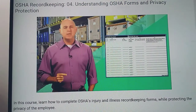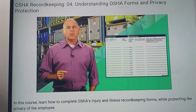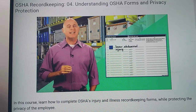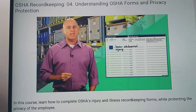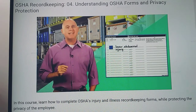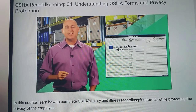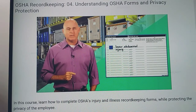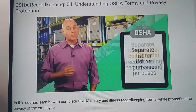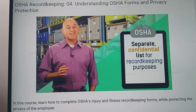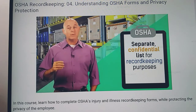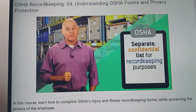In these circumstances, you can simply enter 'privacy case' in the name column on Form 300. If the employee's identity can be determined by the details of the injury, the employer must use some discretion when describing the case. For example, an injury to a reproductive organ could be entered as 'lower abdominal injury.' OSHA just requires that enough information be entered on Form 300 to identify the cause and severity of the injury. Employers are not required to divulge intimate details of privacy cases, but are required to keep a separate confidential list of privacy case numbers and employee names for record keeping purposes.